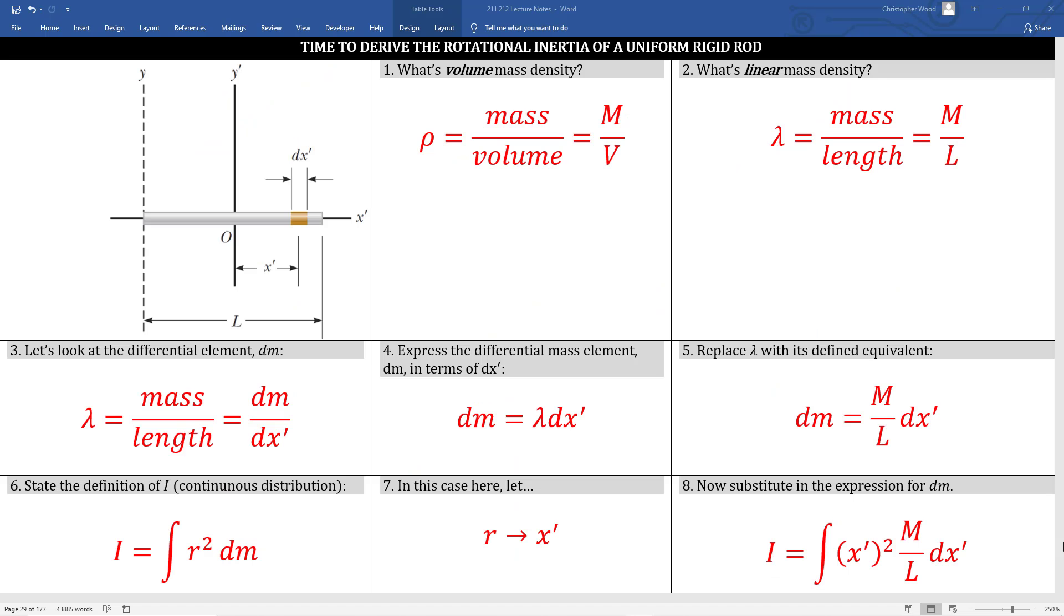Let's start with a stick, also known as a uniform rigid rod. This derivation is very reusable. This is the essence of calculus in physics, at least at this level. The technique you learn in this derivation is definitely going to be recyclable to other applications.